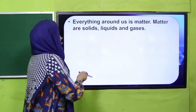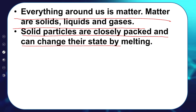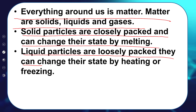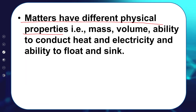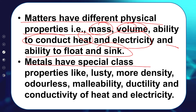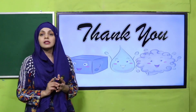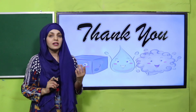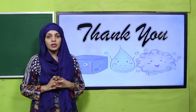It's time for the wrap-up. We have learned a lot from this unit. Everything around us is matter; matter exists as solids, liquids, and gases. Solid particles are closely packed and can change state by melting. Liquid particles are loosely packed and can change state by heating or freezing. Gas particles are far apart and can change state by adding or removing heat. Matter has different physical properties: mass, volume, ability to conduct heat and electricity, and ability to float and sink. Metals have special properties like luster, density, malleability, ductility, and conductivity of heat and electricity. I hope you now understand many terms like mass, volume, and density. Keep everybody around you safe, have a good day, thank you so much, and Allah Hafiz.